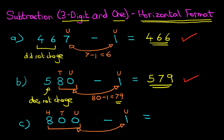So what is 800 minus 1? We are simply counting back by 1. So the number before 800 is, that's right, it is 799.